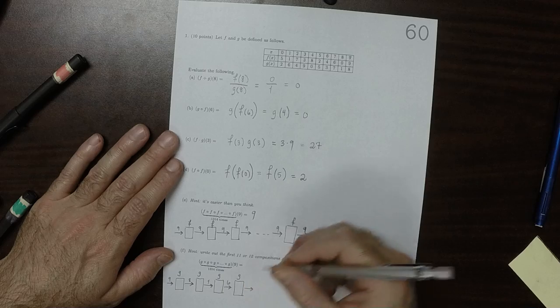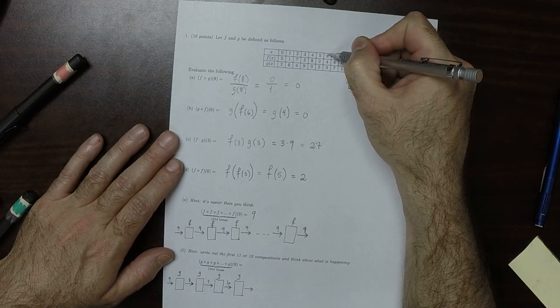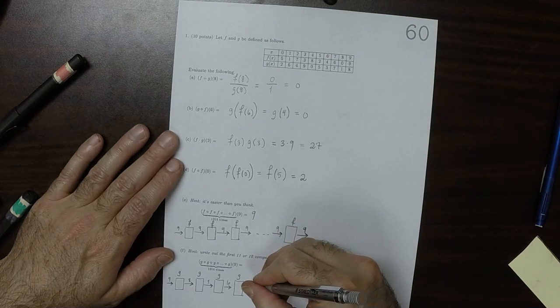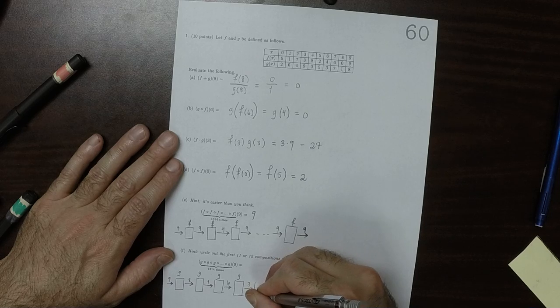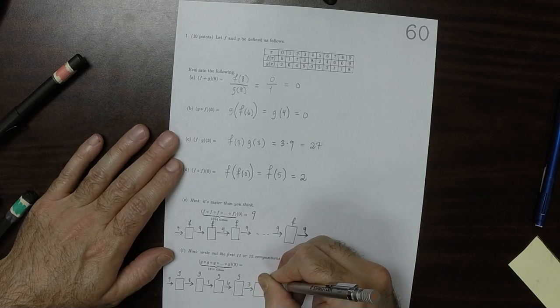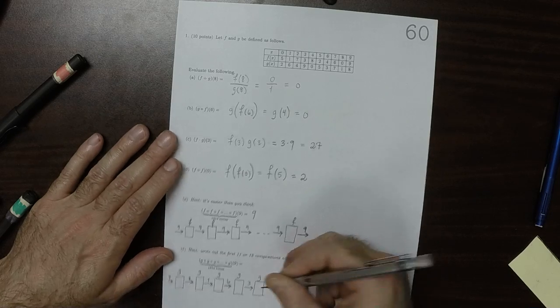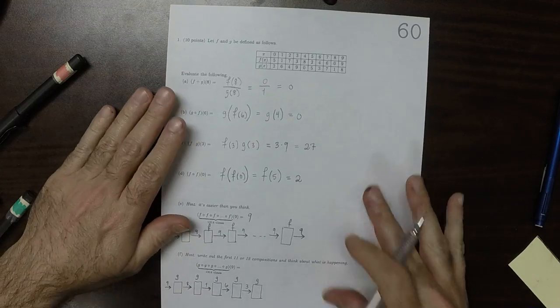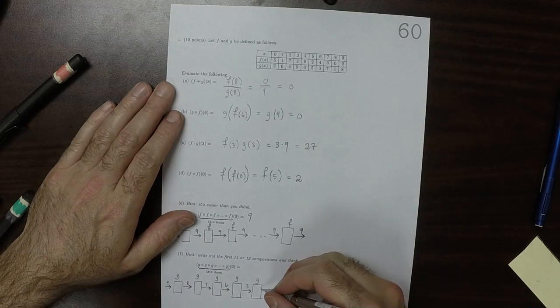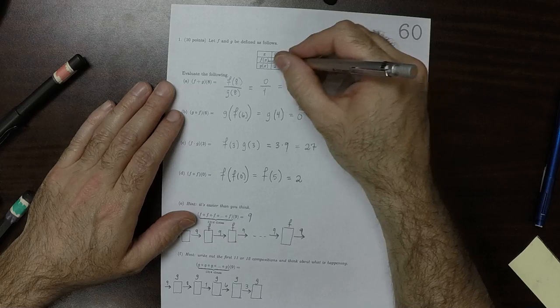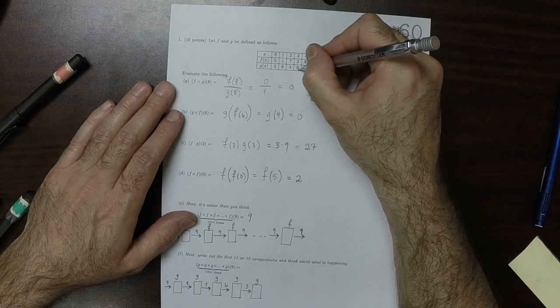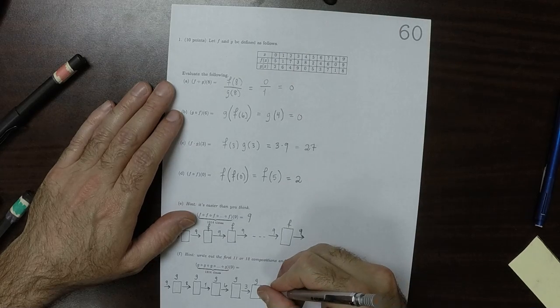And if we put that into a g machine, g of 6 is 3. If we put that into a g machine, g of 3 is 9, so that would be a 9.